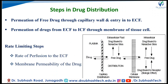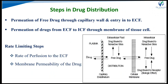The steps involved in drug distribution are two. First, permeation of free drug through the capillary wall and entry into the extracellular fluid. Second, permeation of drug from extracellular fluid to intracellular fluid through the cell membrane. The rate-limiting step is the rate of perfusion to the ECF and the membrane permeability of the drug.